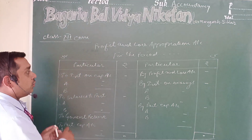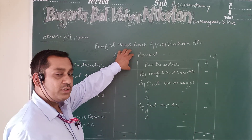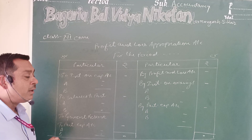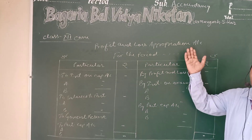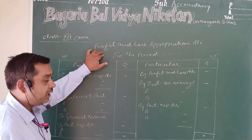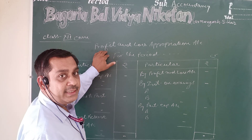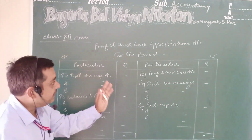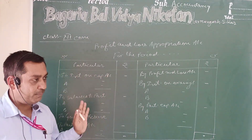So, as we have seen, the Profit and Loss Appropriation Account is the extension of the Profit and Loss Account. The Profit and Loss Account is used to find out the net profit, and that net profit is divided among the partners through the Profit and Loss Appropriation Account. Now we will discuss the journal entries — specifically, how profit is transferred to the Profit and Loss Appropriation Account.